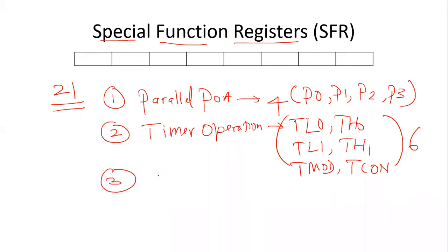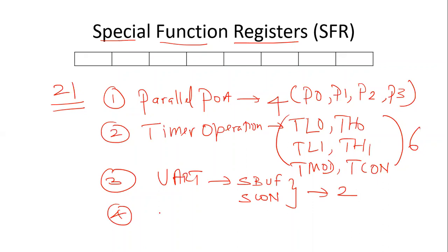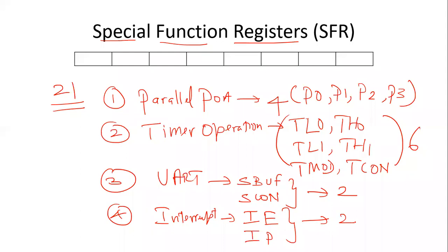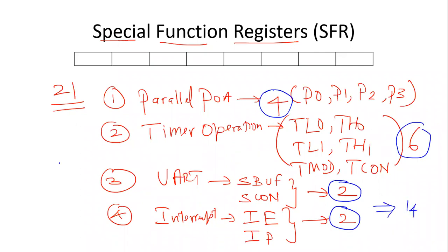The third category is UART or serial communication, with two SFRs: SBUF (serial buffer) and SCON (serial control). For interrupt operation, there are two more: IE (interrupt enable) and IP (interrupt priority). Adding these up: 4 + 6 + 2 + 2 = 14 SFRs. Since there are 21 total, 21 minus 14 gives 7 miscellaneous SFRs.